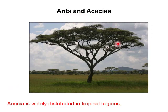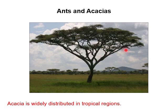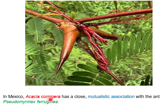Now, ants and acacia. Acacia is a widely distributed tree in tropical regions, and ants are very closely associated with this tree. In Mexico, Acacia cornigera has a close mutualistic association with the ant Pseudomyrmex ferrugineus. This is a specific example of mutualism.